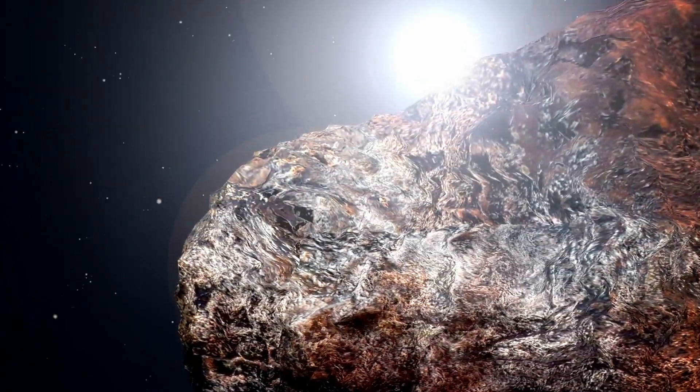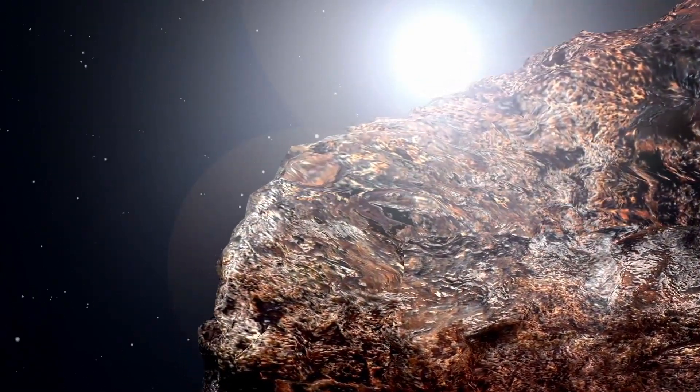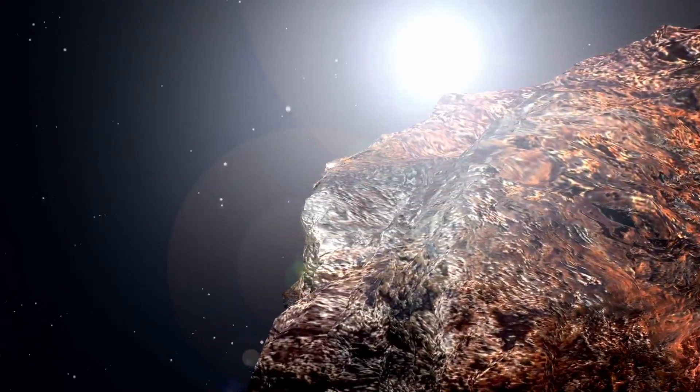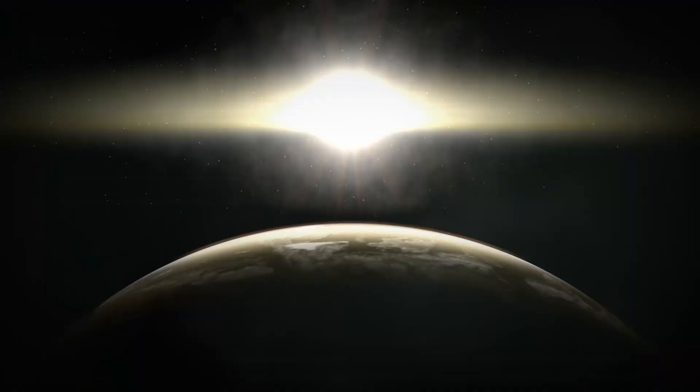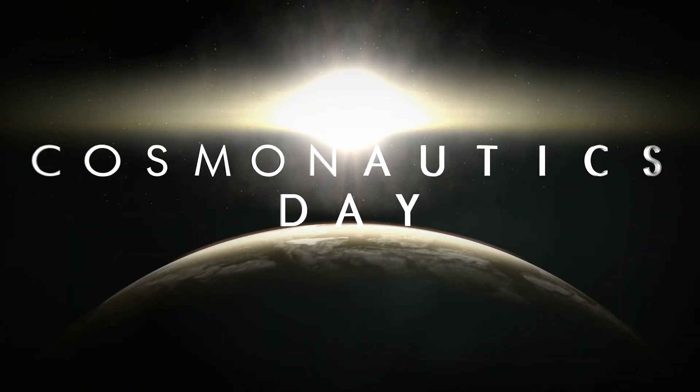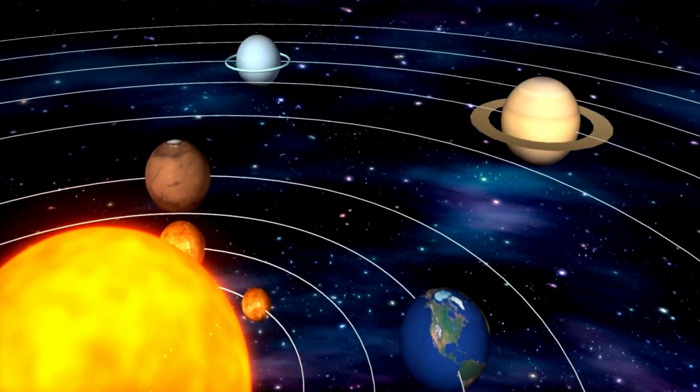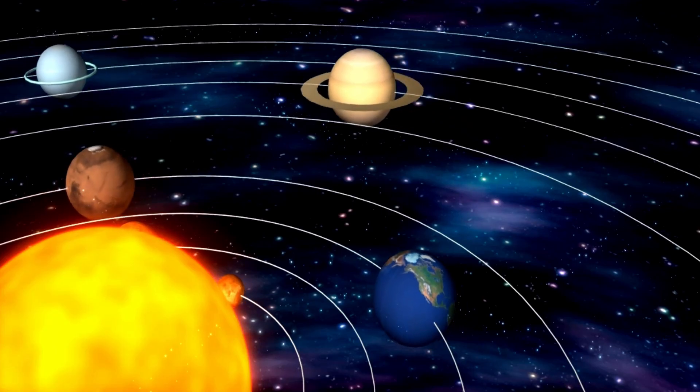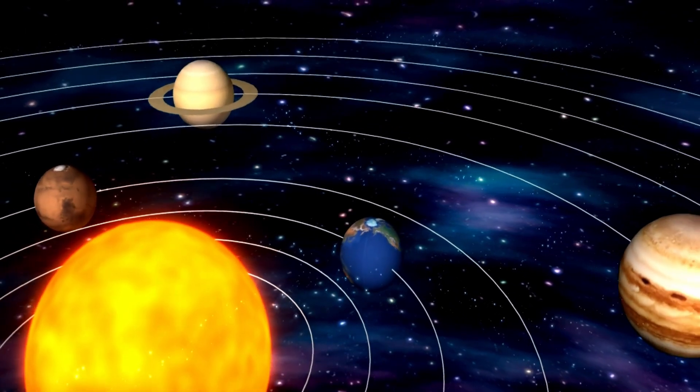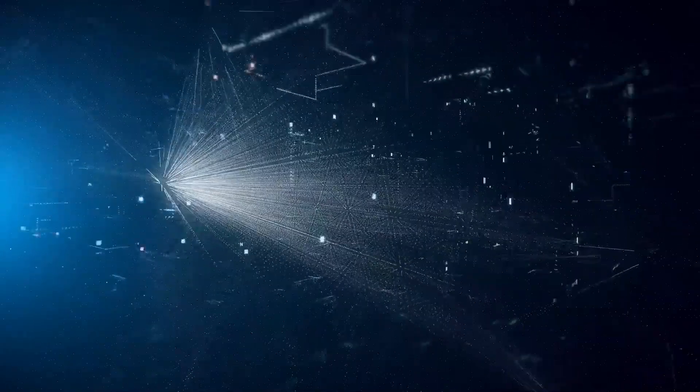But 3i Atlas moved differently. It didn't barrel through space. It coasted. Its trajectory was eerily smooth, almost like it had been piloted. Its path allowed it to drift past several of our planets in ways that maximized gravitational efficiency, as though it had mapped our solar system long before arrival. That alone was troubling.